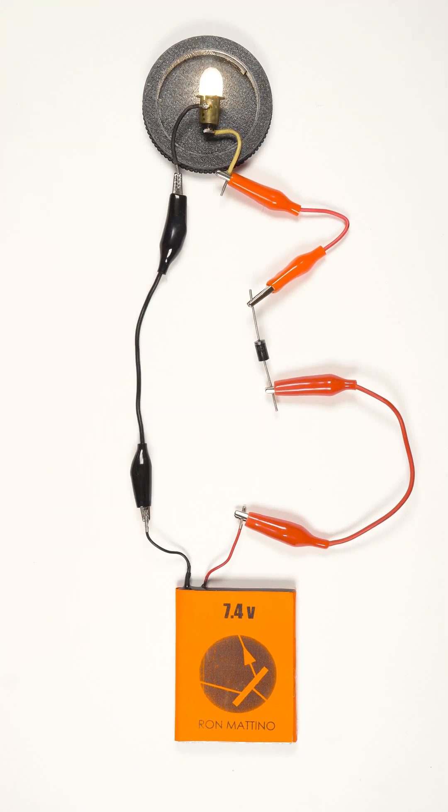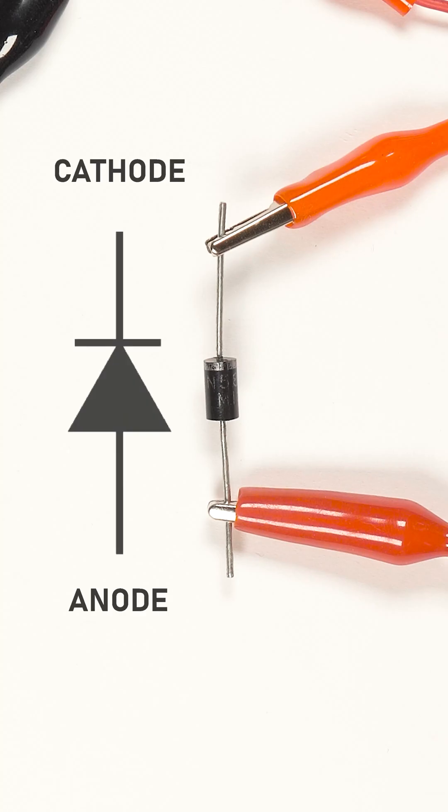A diode is a two-electrode device that conducts current only in one direction. The diode's terminals are called anode and cathode. The diode's triangle reflects the direction of current flow.